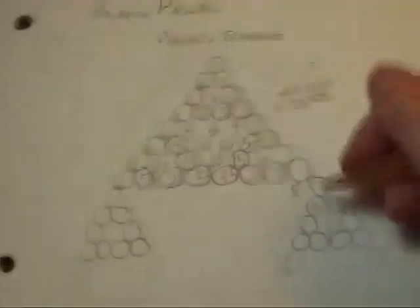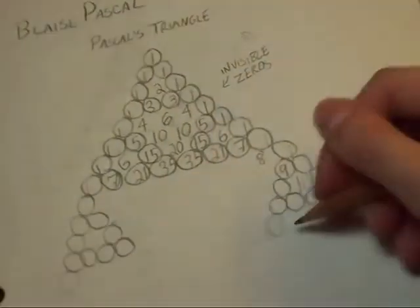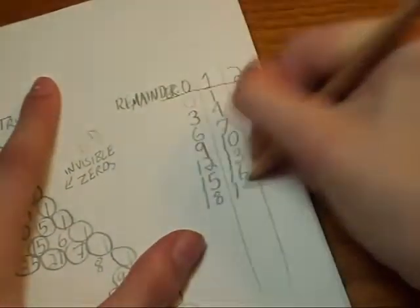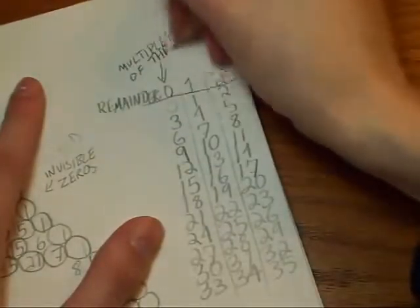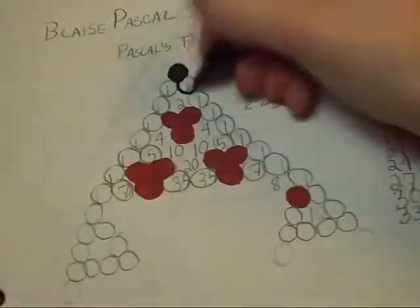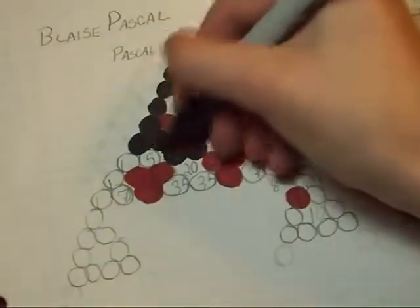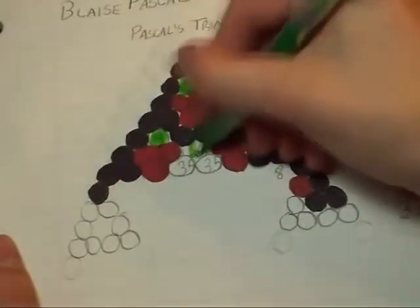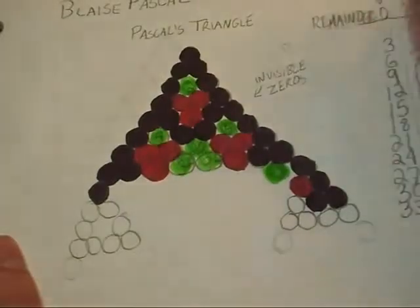But instead of two colors, let's try 3. We'll color them depending on what the remainder is when you divide the number by 3 instead of 2. Here's a chart. So all the multiples of 3, I'm a color red. Remainder 1 will be black and 2 will be green. The structure is a little different from Sierpinski's Triangle already, but I'm tired of figuring out remainders based on individual numbers. So let's figure out the rules.